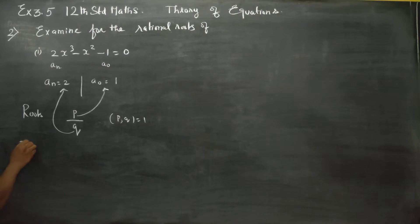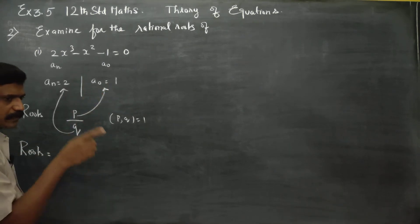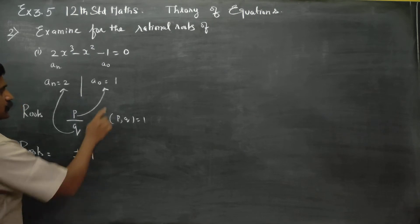Then, roots, first, P is 1, so factors of 1 are 1, then plus or minus 1. This is a chance.